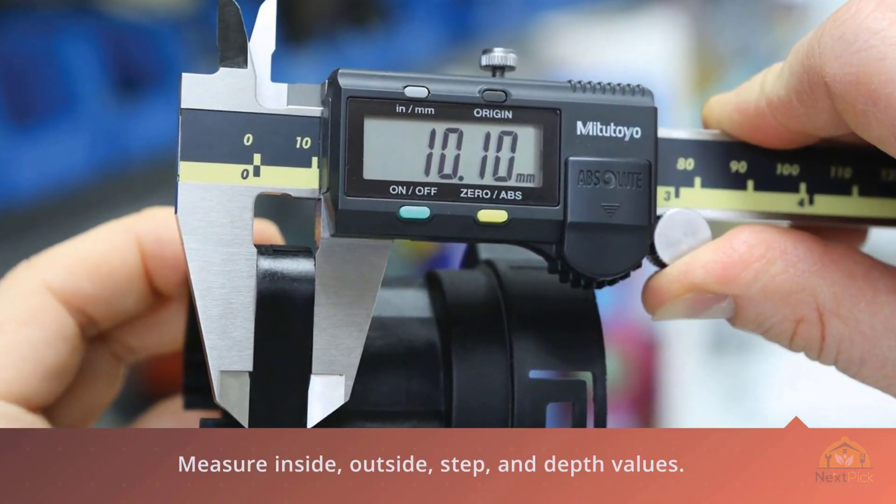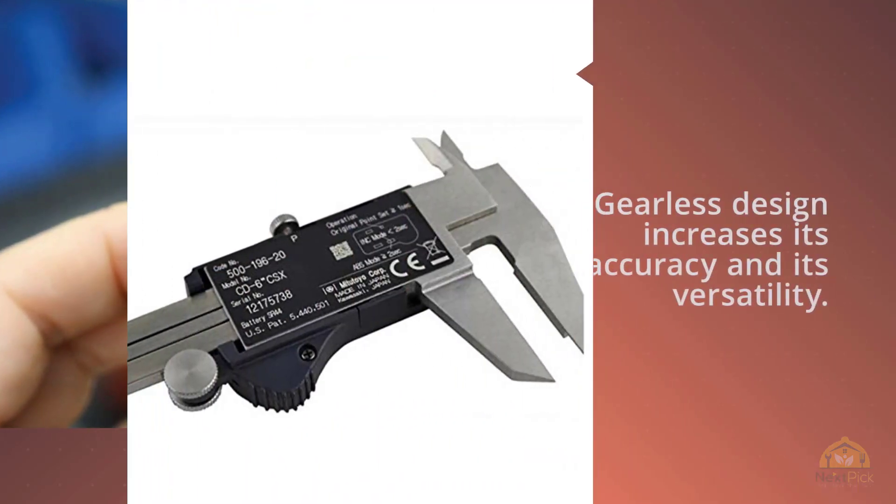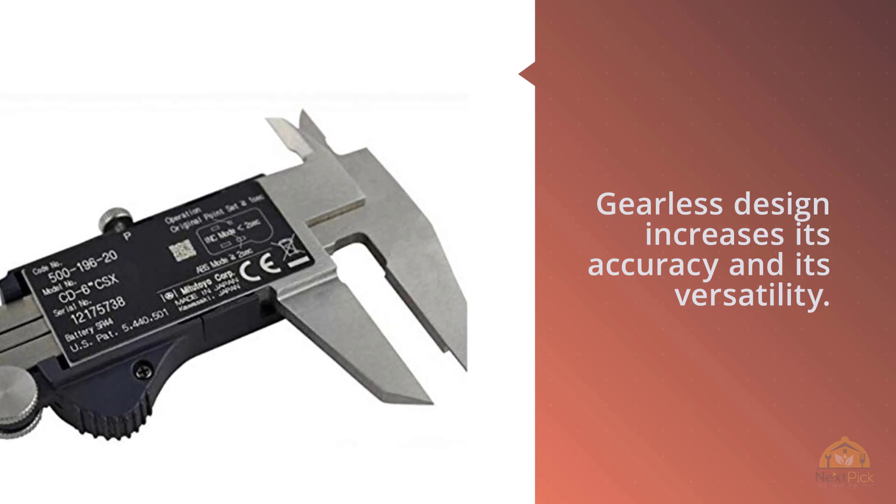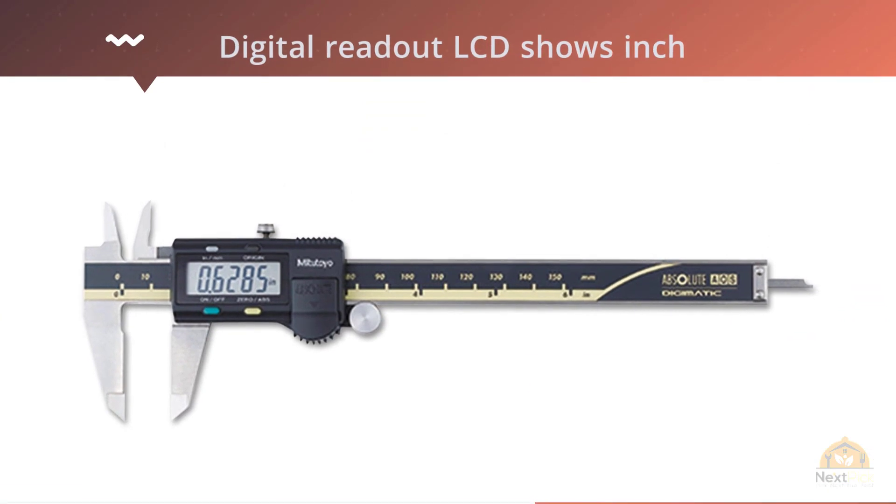Mitutoyo 500-196-30 digital caliper has a 0 to 6 inch measuring range with 0.0005 increments of precision and advanced on-site sensor and electromagnetic inductive sensor for resistance to dirt, oil and water. For more details click the link in description.